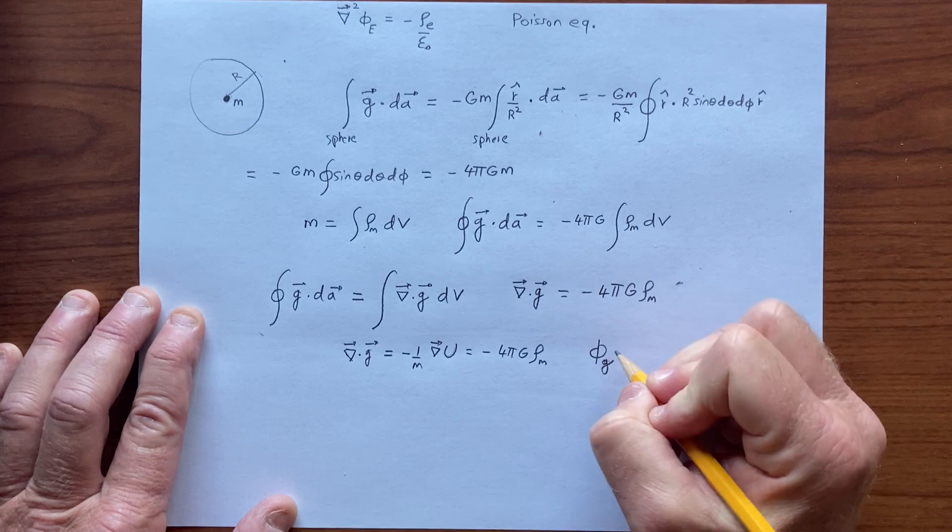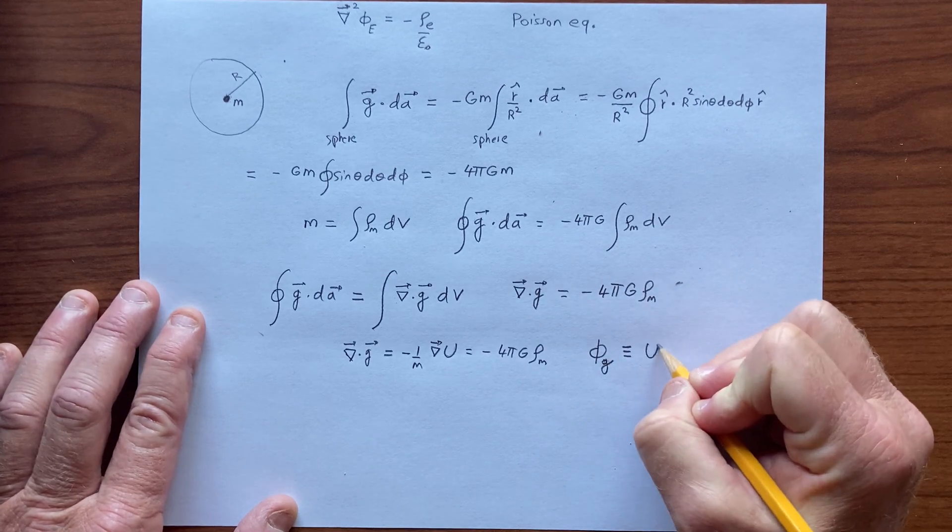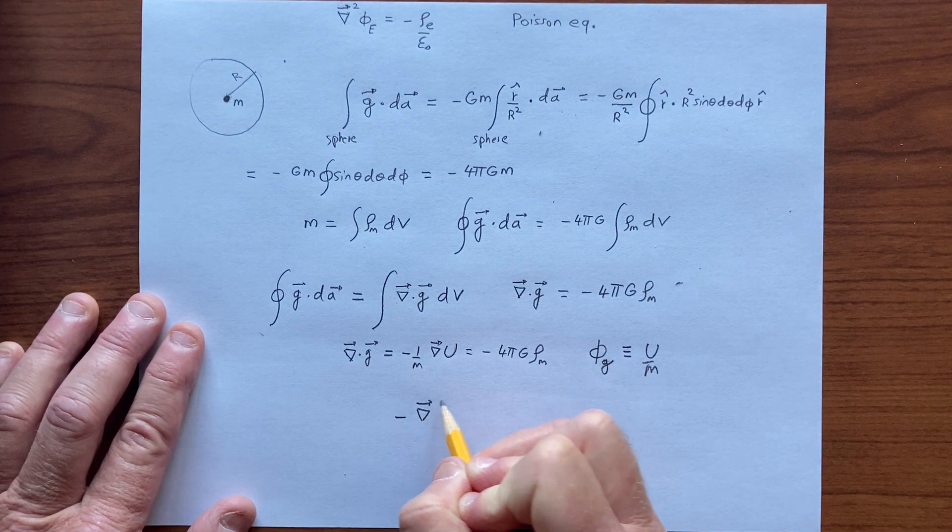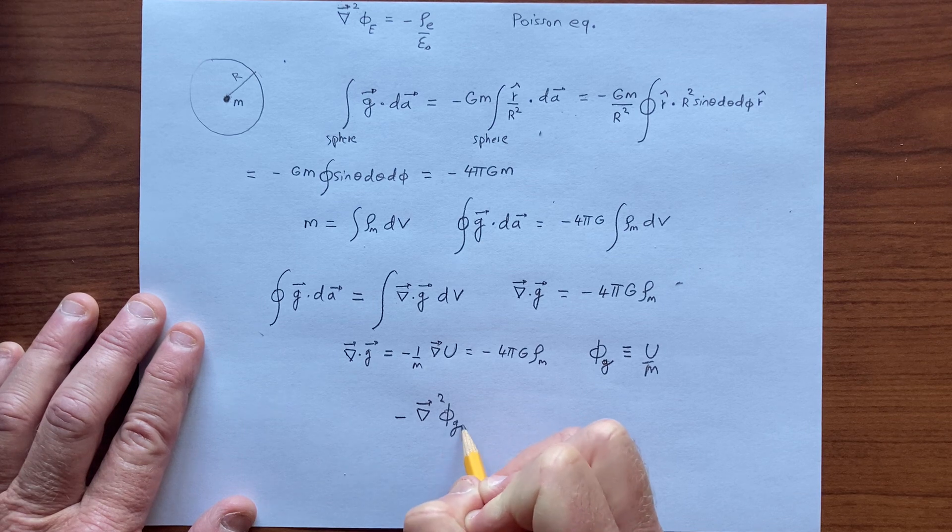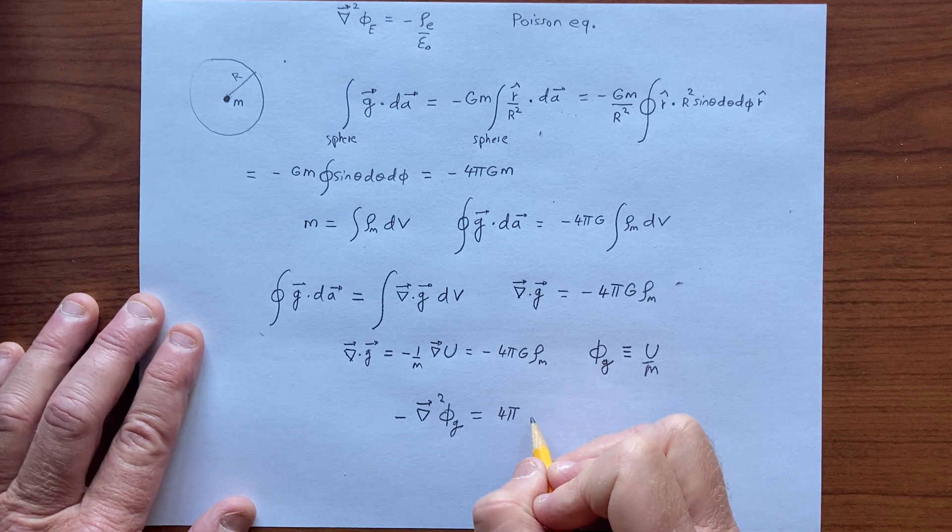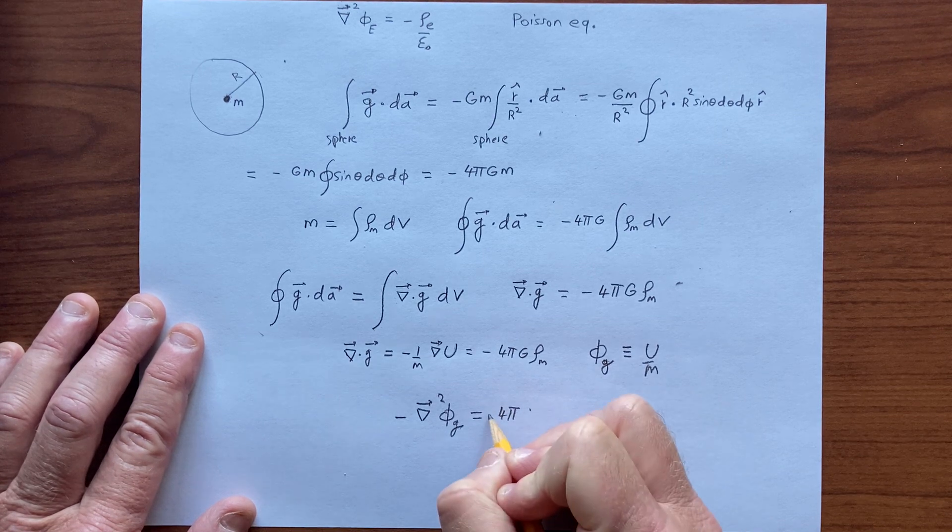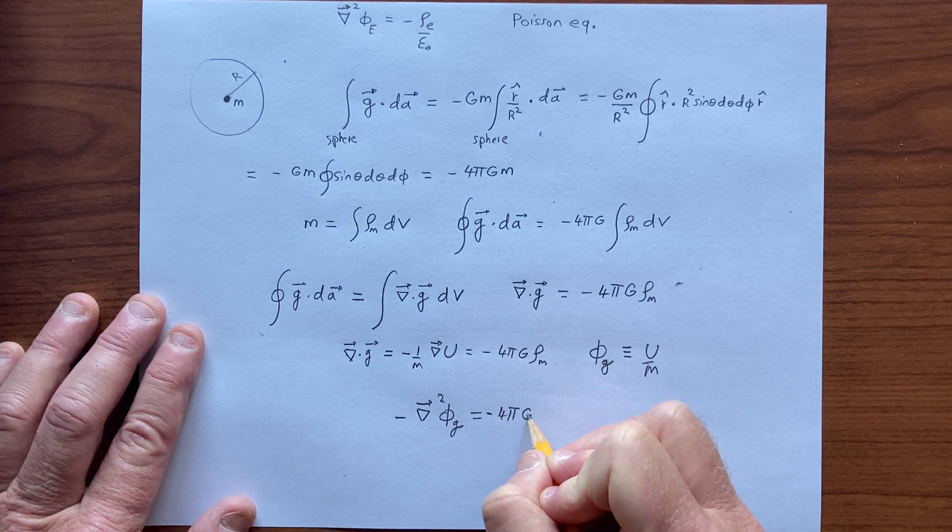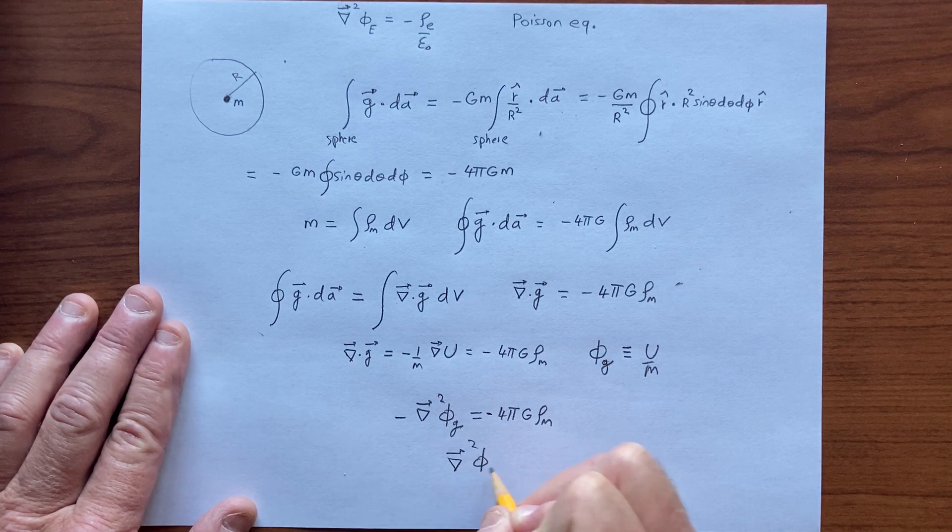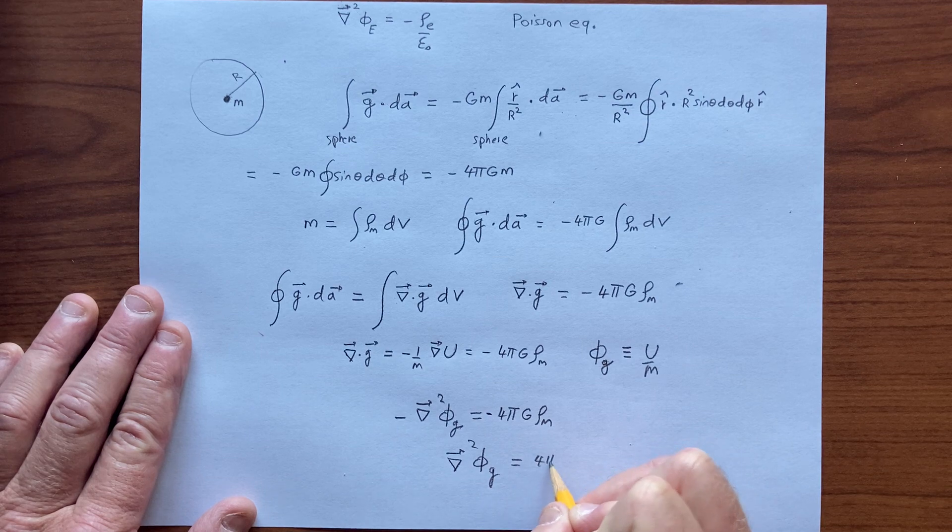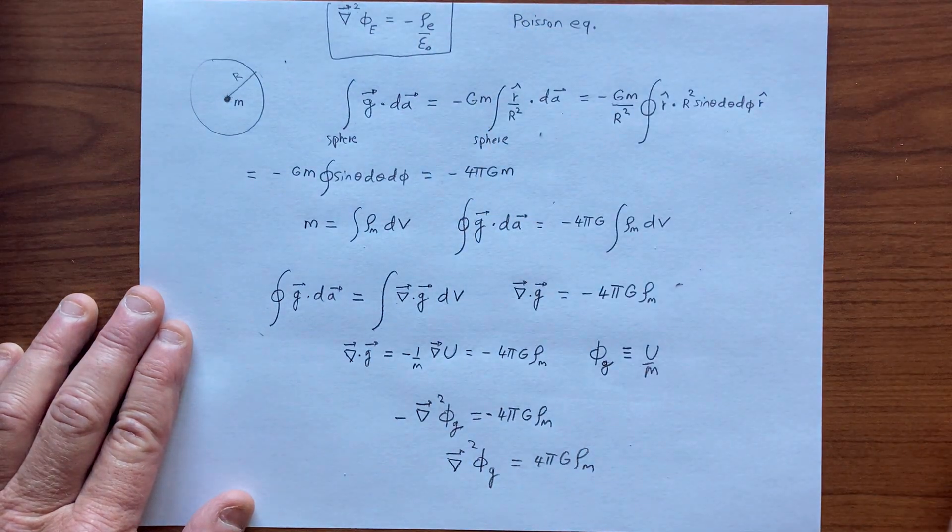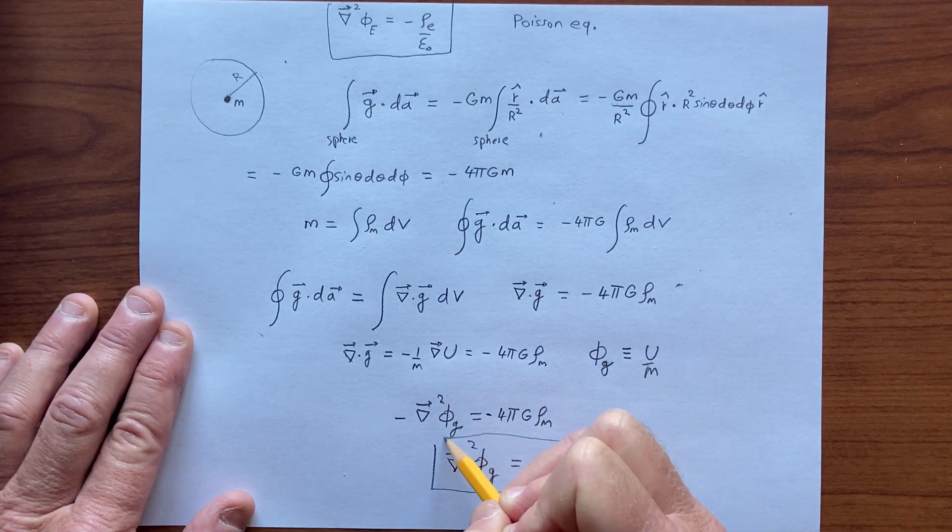Phi g is defined as u divided by m, and so we have minus del squared on this phi g is equal to minus 4 pi g rho m, or del squared phi g equals 4 pi g rho mass, and so we compare this to this equation for electric fields and for gravity.